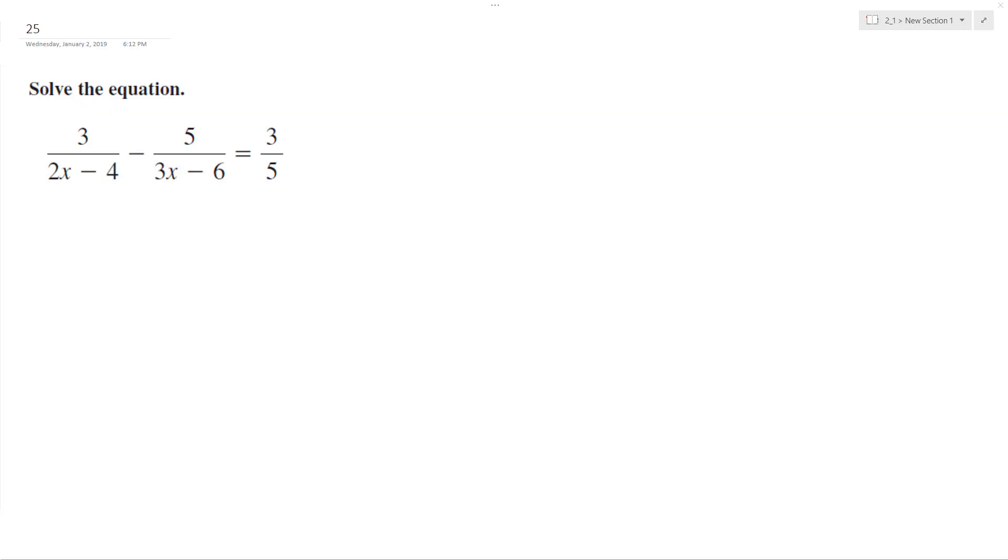Alright, so we want to solve the following problem for x. To do that, I need a common denominator. I can break down the first denominator into 2 times x minus 2, the second denominator into 3 quantity x minus 2, and then 5 is just 5.